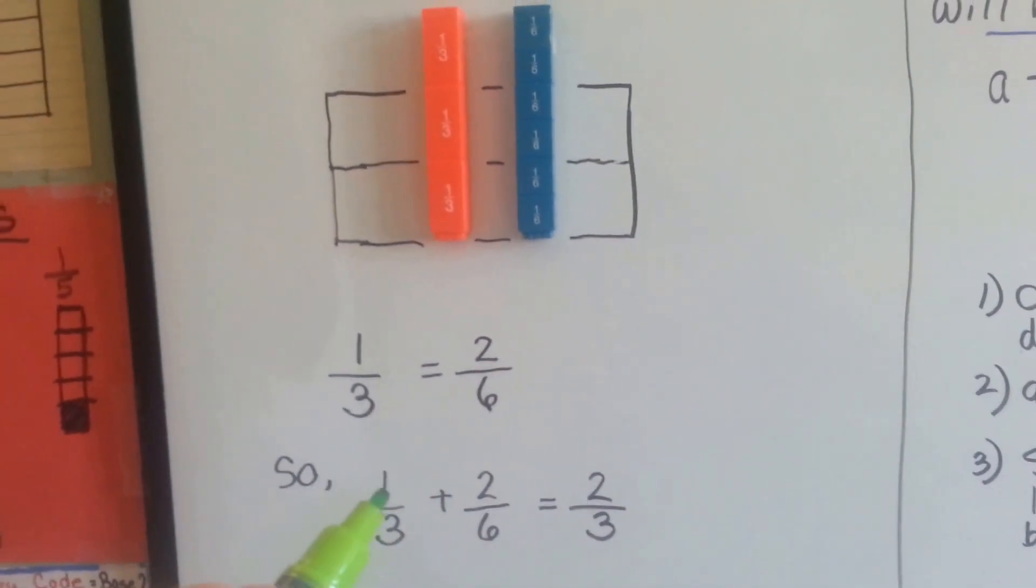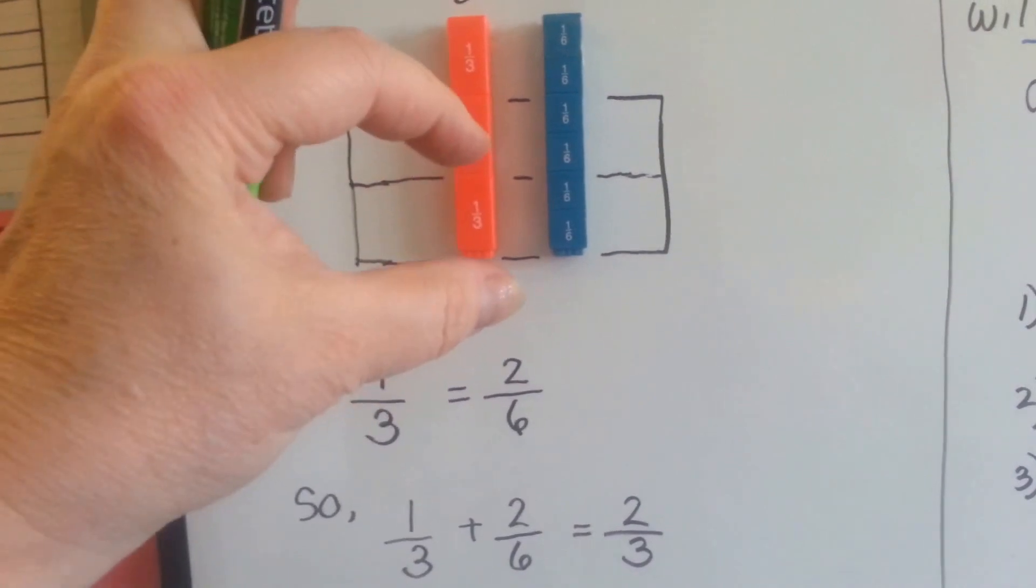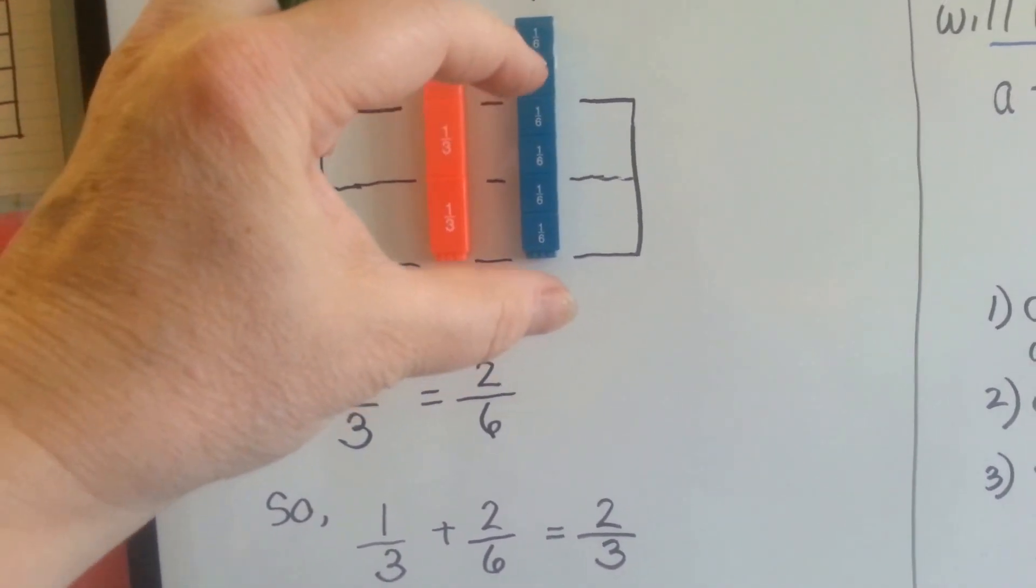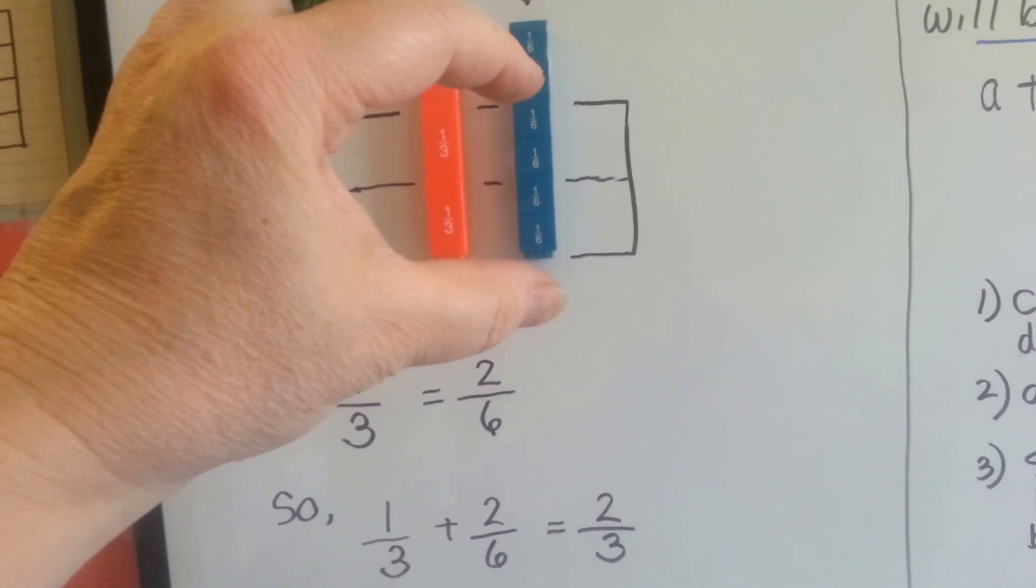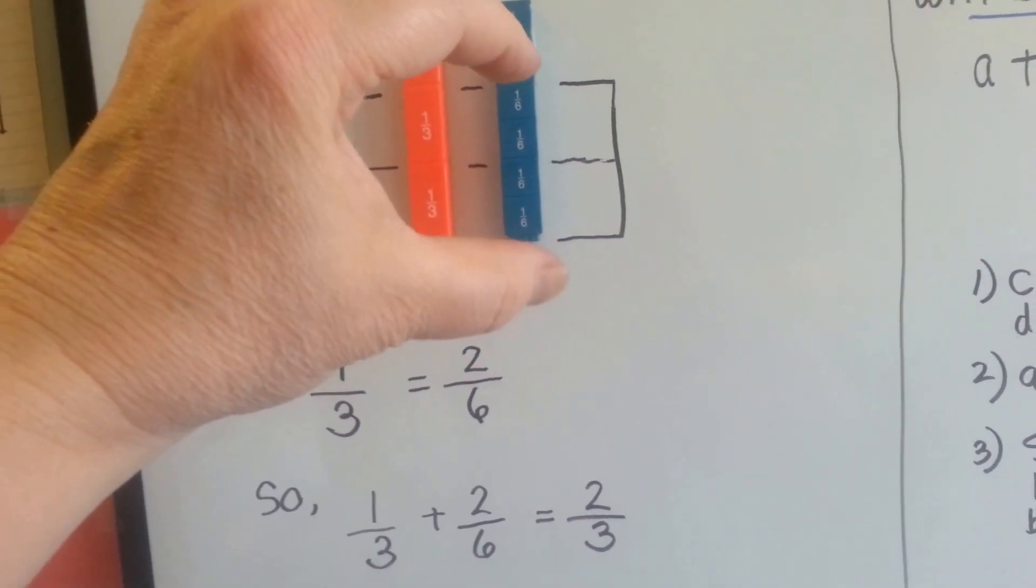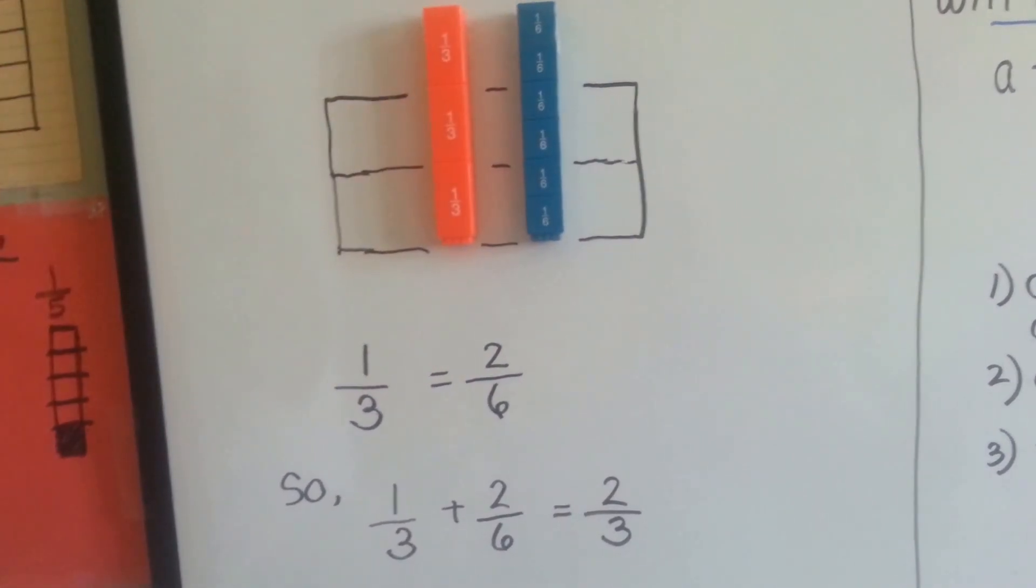Because of this, if we add the 1 third to the 2 sixths, it would be like adding a 1 third and a 1 third. Or, 4 sixths would be a total. If we added this on top of here, it would be the same as 4 sixths.